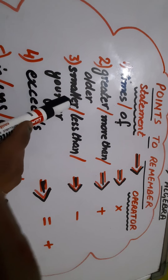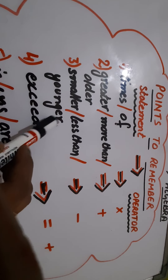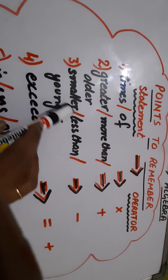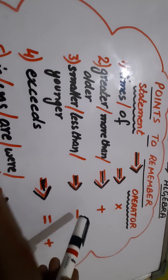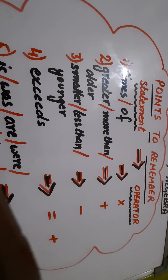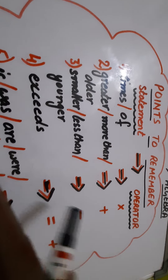Then we have 'smaller than', 'less than', 'younger' — means chota (smaller). So for all of these, which mathematical operator do we have? Minus sign.